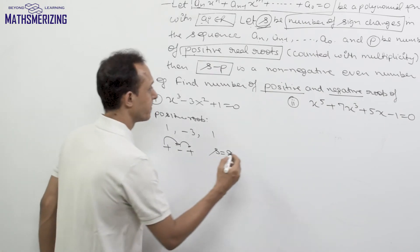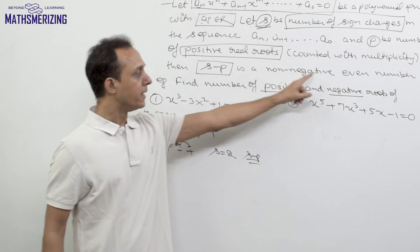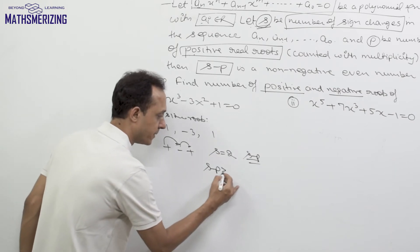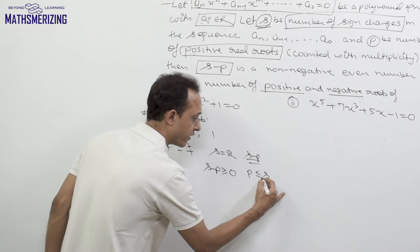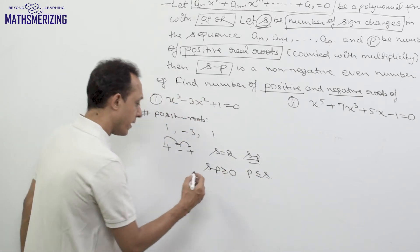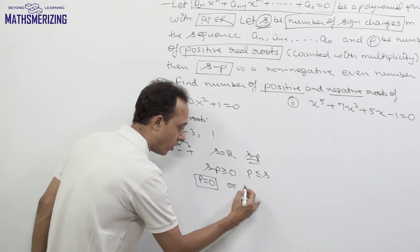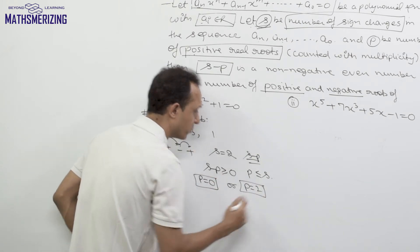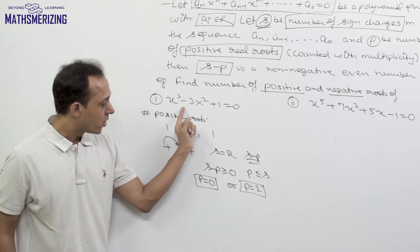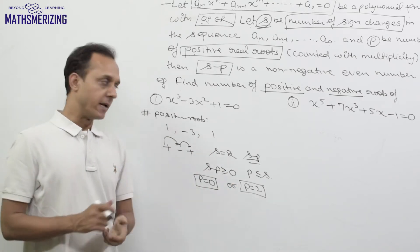So the number of sign changes s is 2. Descartes' Rule of Signs says s minus p should be a non-negative even number, so p must be less than or equal to s, and the difference must be even. That gives two possibilities: either p = 0 or p = 2. So this equation will have either no positive real root or two positive real roots.